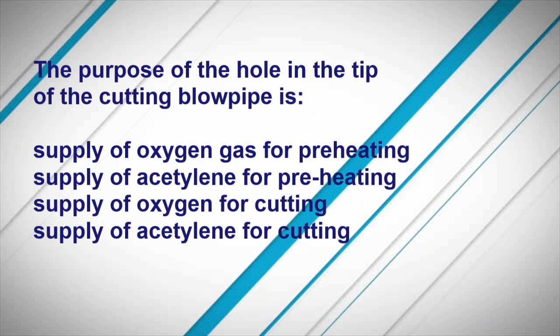The purpose of the hole in the tip of the cutting torch pipe is the supply of oxygen for cutting.